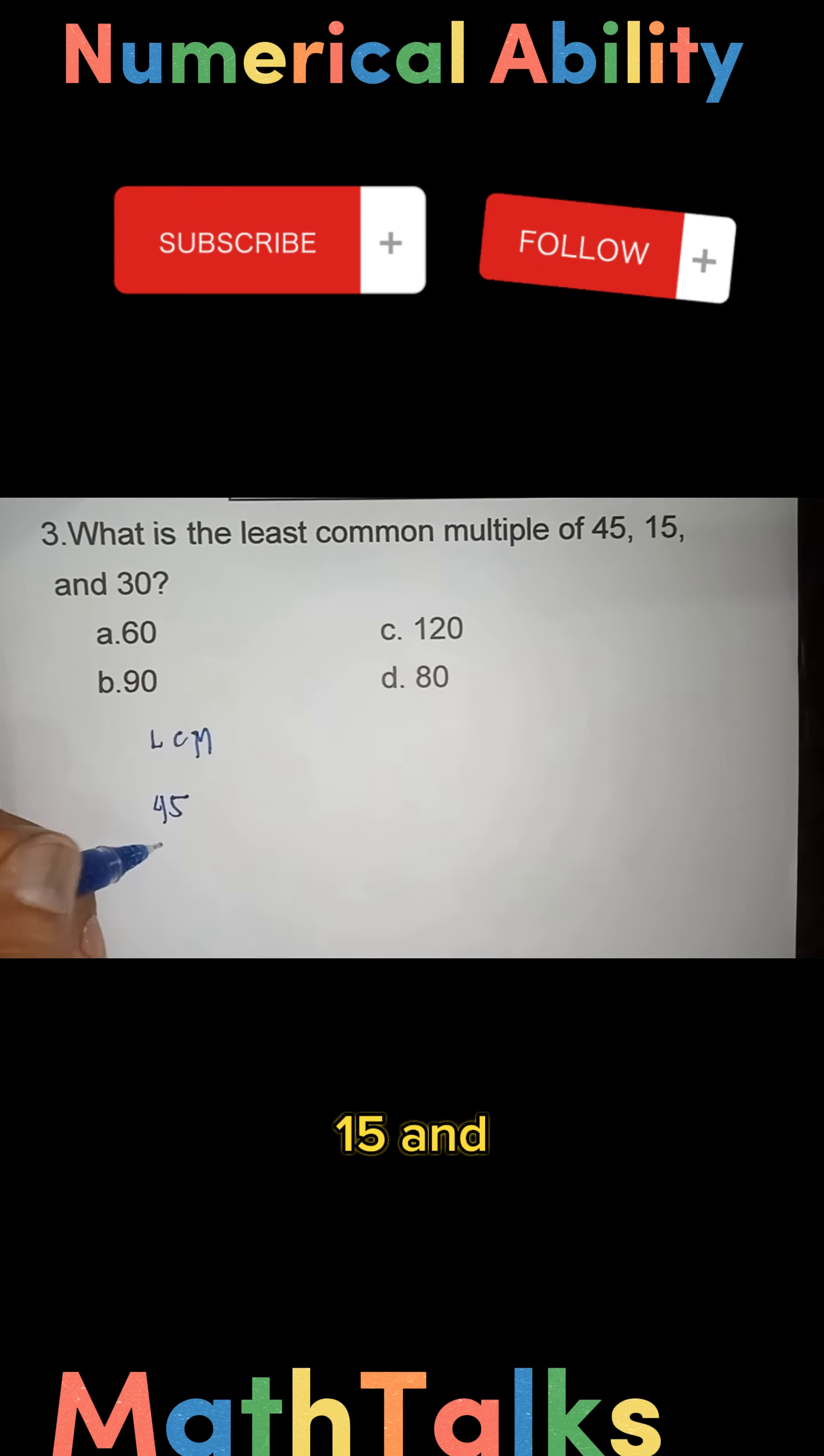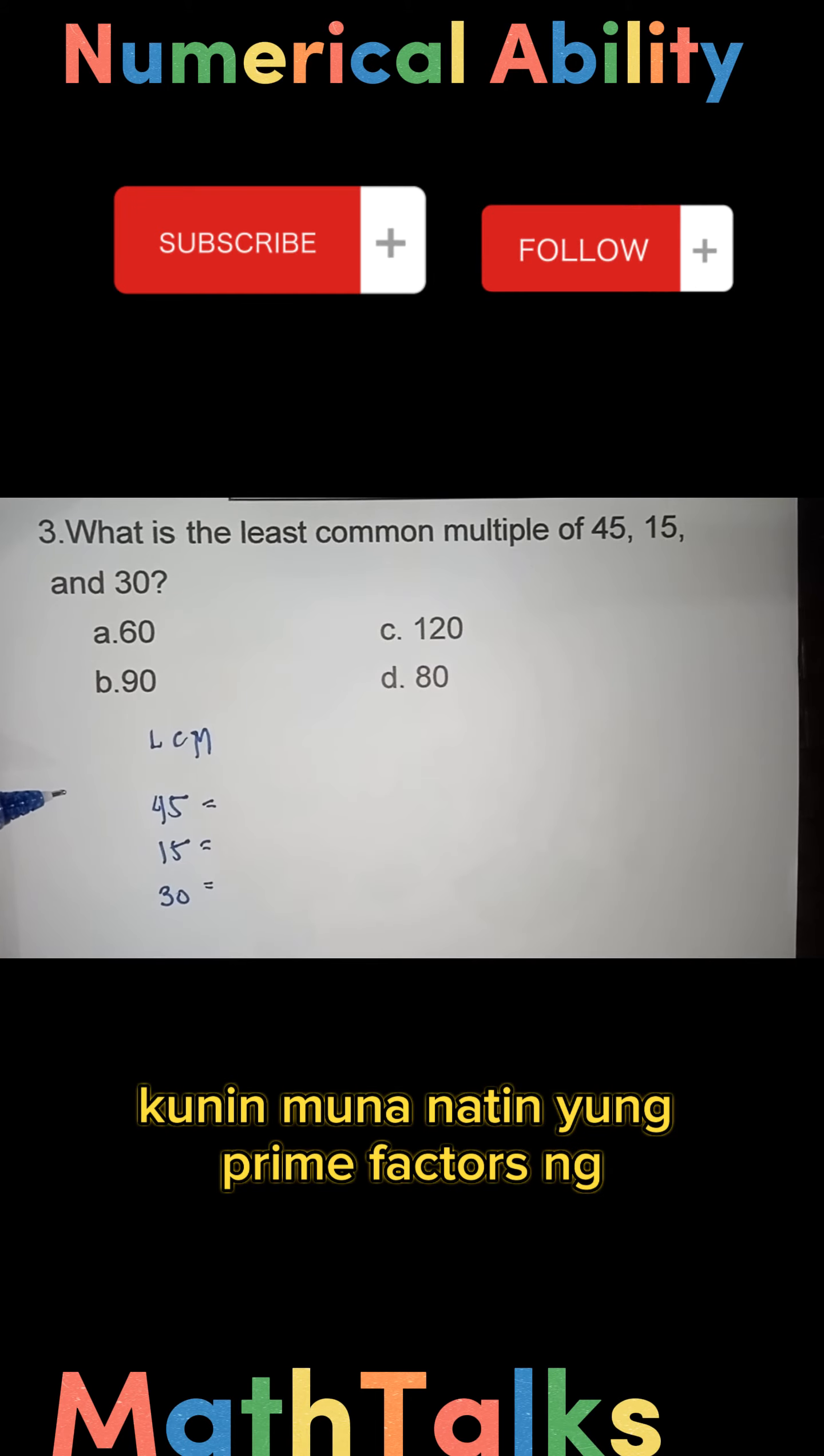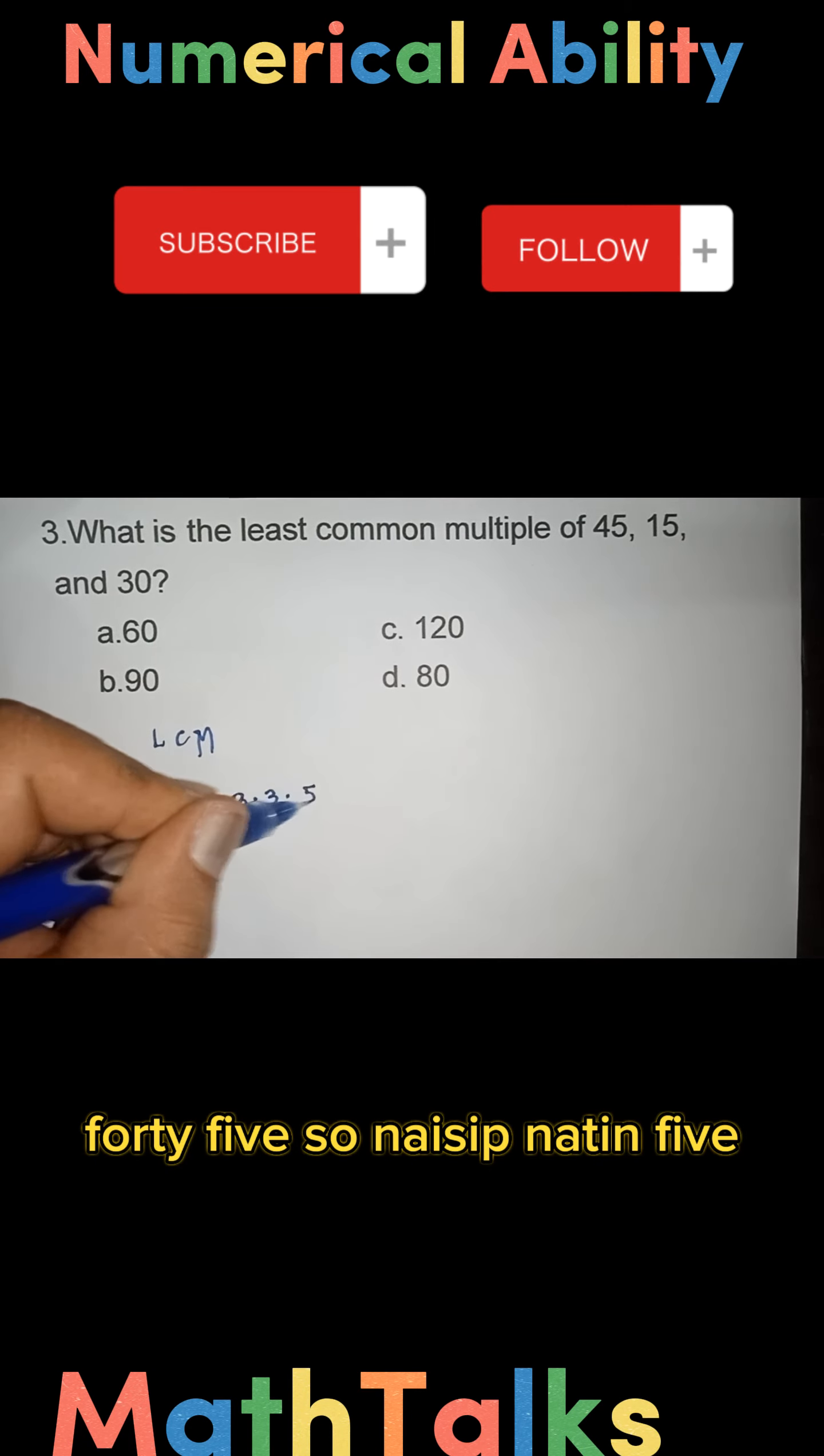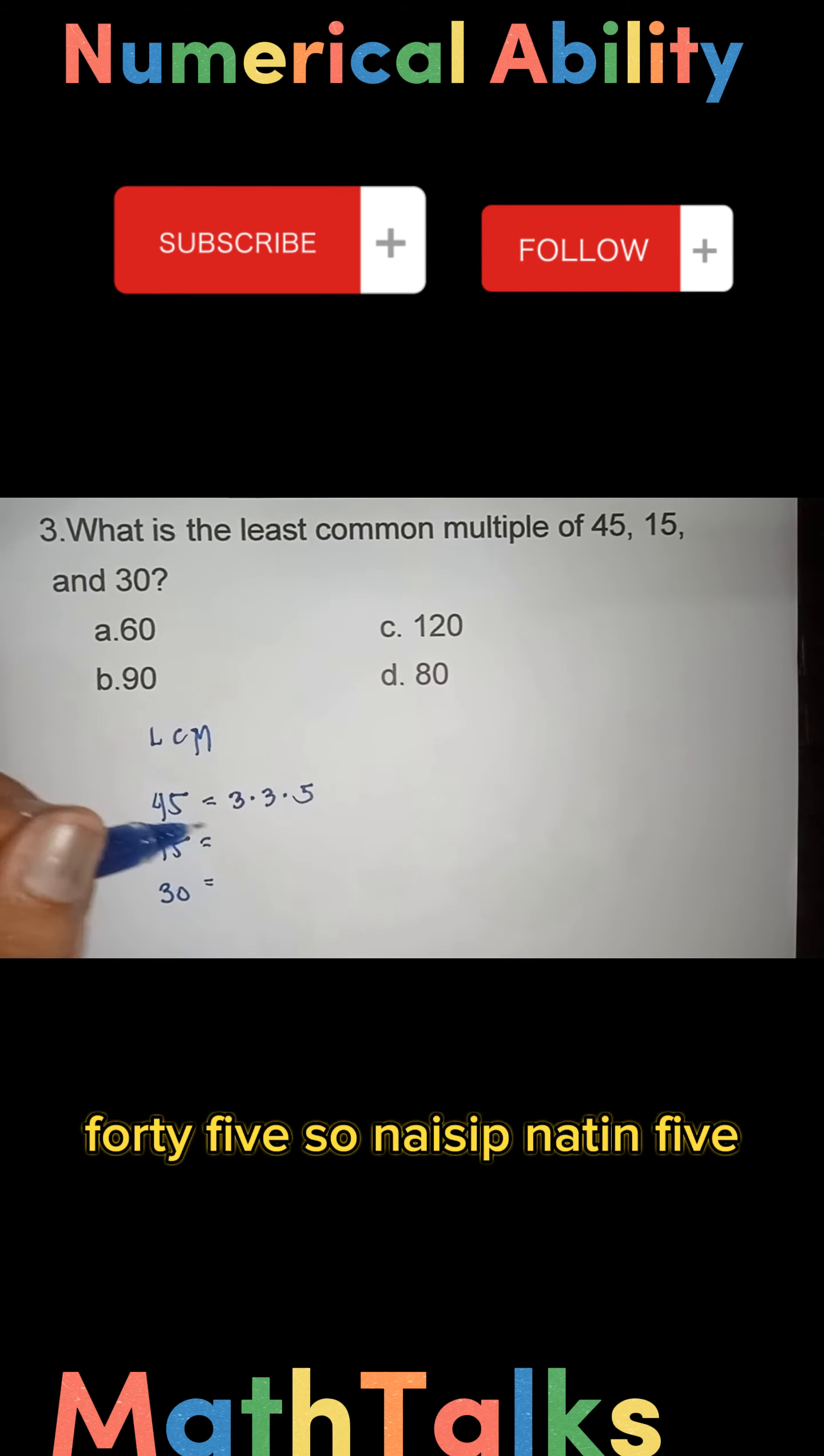Let's pull out the prime factors of 45 first. We have three, three, and five. Three times three is nine, times five is forty-five. Next, 15. The prime factors of 15 are 3 and 5. Three times 5 is 15.